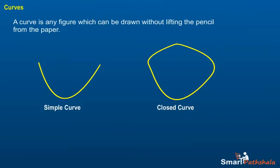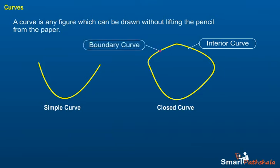In a closed curve, there are three parts: interior or inside of the curve, boundary or on of the curve, and exterior or outside of the curve.